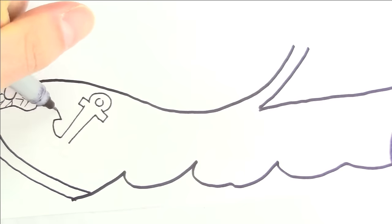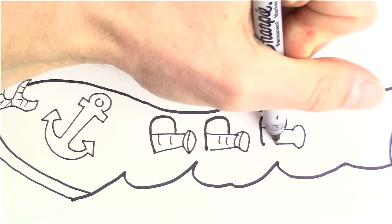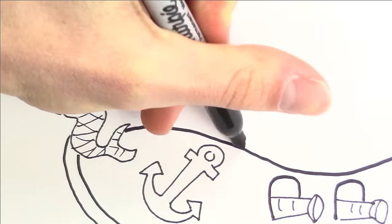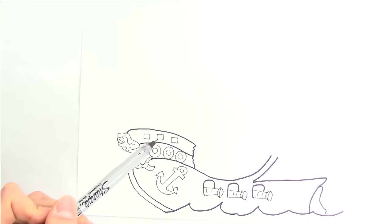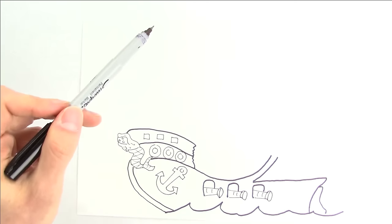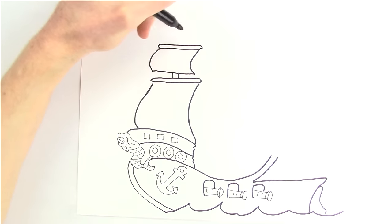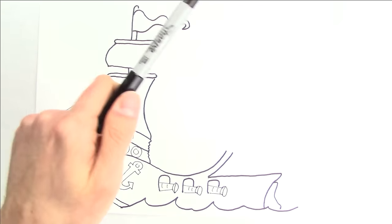Let's add an anchor here and some really powerful cannons. Now that we have the hull, let's draw the next level of the ship. And above this, we'll need some sails and a flag on top. Now we need another big sail, a crow's nest, and another pirate flag.